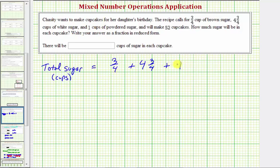Now we'll find this sum to determine the total sugar. First we'll write four and three-fourths and one in fraction form. We'd have three-fourths plus four and three-fourths as an improper fraction.